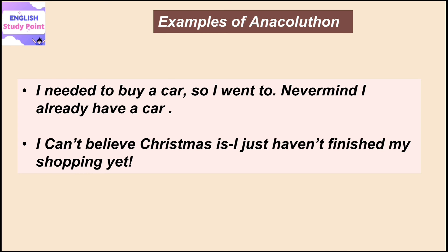'I just haven't finished my shopping yet — ki mainne abhi tak apni shopping puri nahi ki hai.' Toh yahaan par ek point pe wo Christmas ke baare mein discuss kar raha hai jo ki ek festival hai, then another point pe wo shopping ke baare mein discuss kar raha hai. Yeh dono cheezein indicate karti hain ki yeh example anacoluton ka hai — jahaan par ek writer ek idea ke baare mein discuss karta hua usse pura na karke doosre idea ko discuss karta hai. With this, this video lecture ends here. Hope this video lecture will help you in your UGC NET English Literature exams. Thank you.